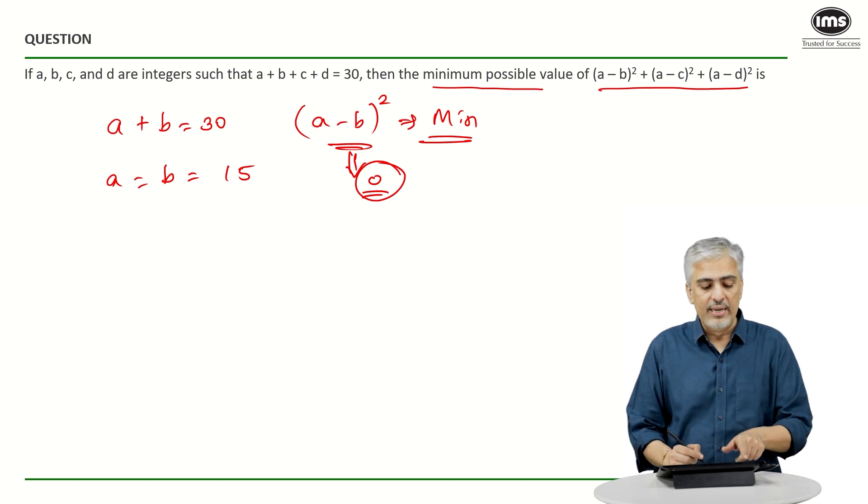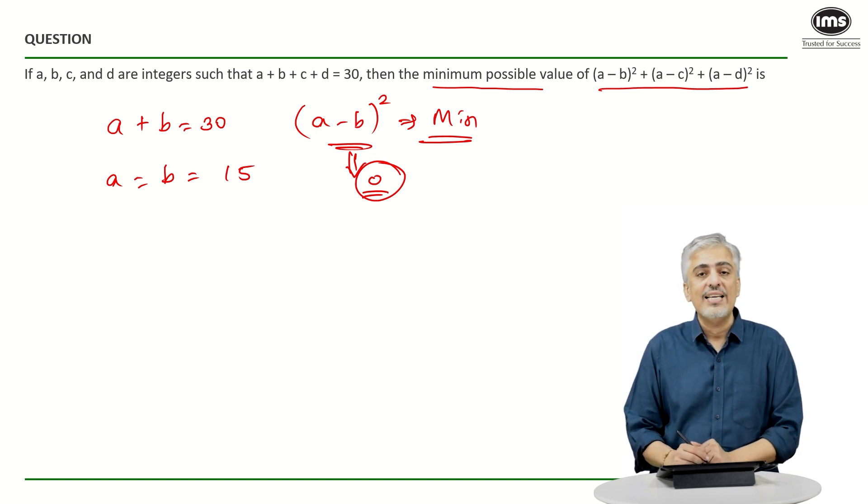I know that A, B, C, D are integers. A plus B plus C plus D has to be 30. Then what is the minimum value for A minus B the whole square plus A minus C the whole square plus A minus D the whole square. Now, the only problem in this case is 30 is not divisible by 4.